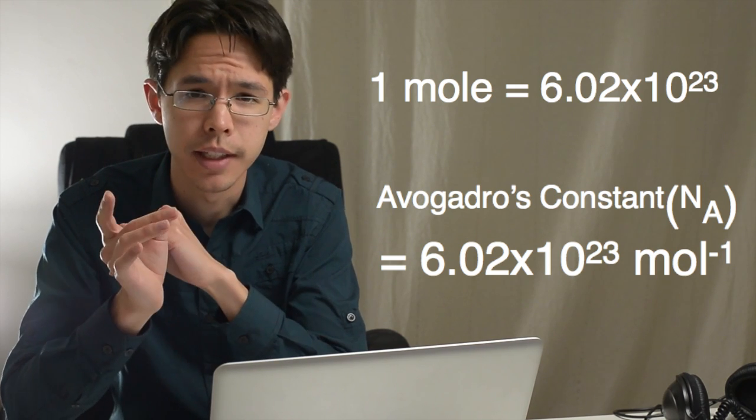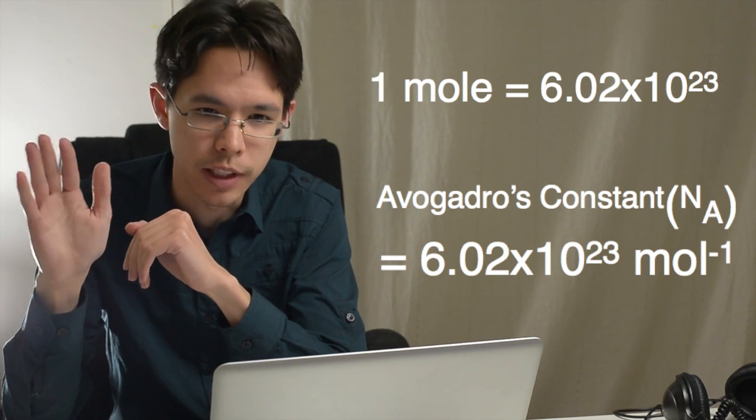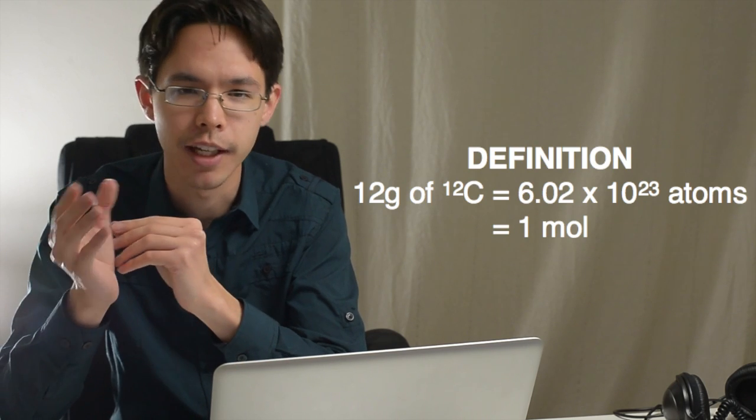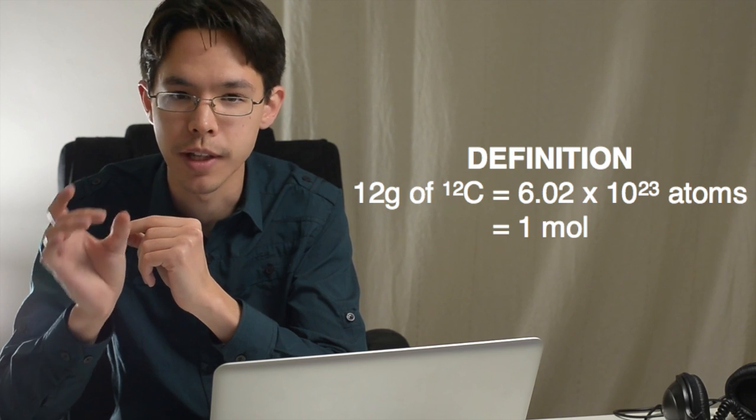When doing calculations we abbreviate this to MOL, we just drop off the E. Using our carbon-12 standard from earlier, Avogadro's constant comes from the measurement of how many atoms there would be if you had 12 grams of carbon-12 as your sample.